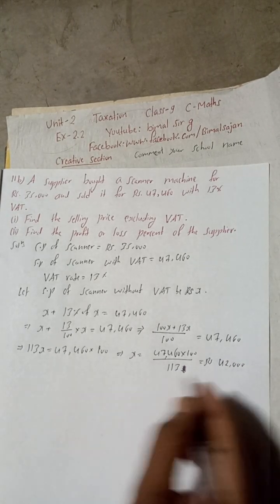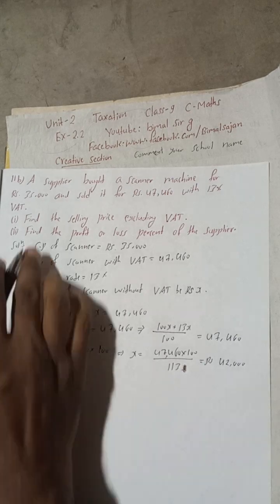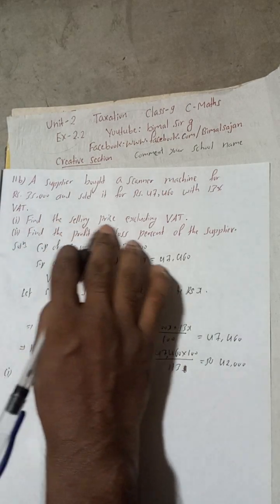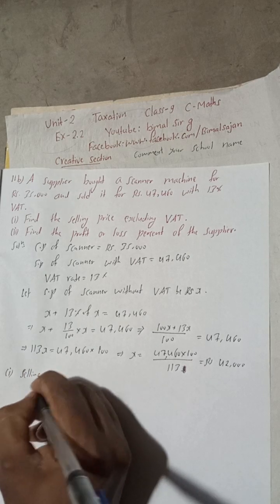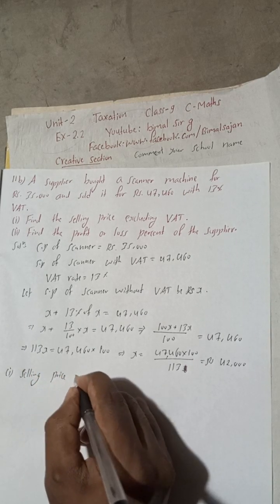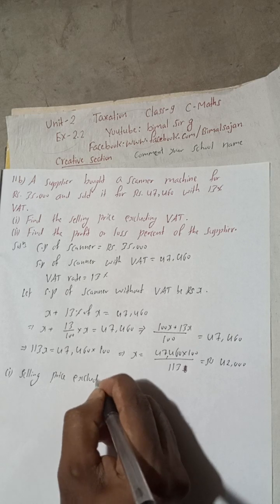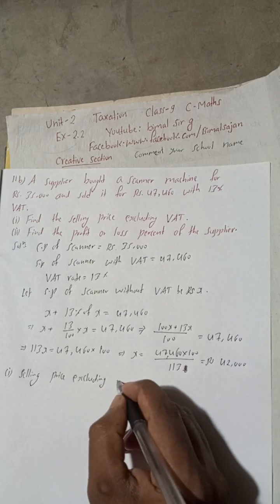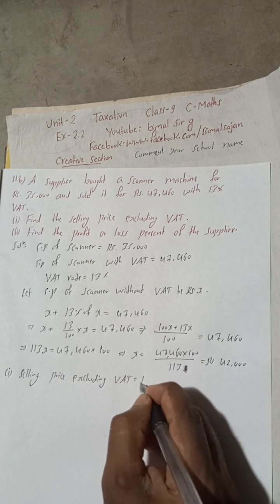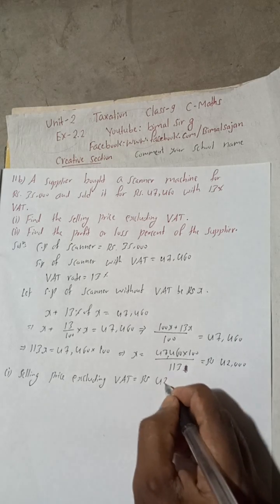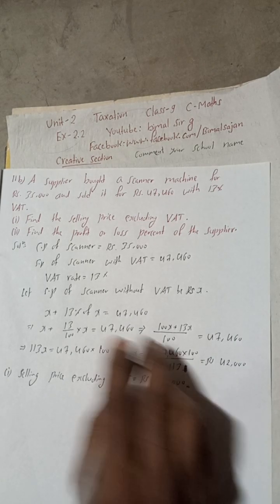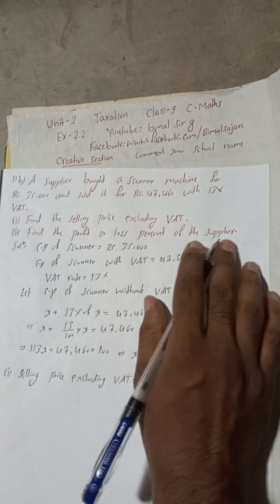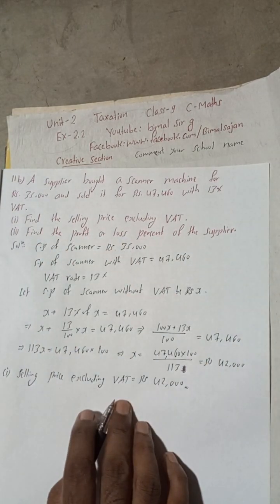Okay, so this is now number one answer, the selling price excluding VAT. Therefore, selling price excluding, that means without VAT, is equal to Rs. 42,000.